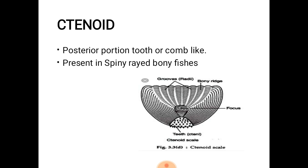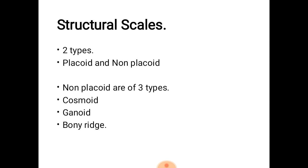As you can see the grooves in the diagram. On the basis of structure, two types of scales are present: placoid and non-placoid. Non-placoid scales are of three types: cosmoid, ganoid, and bony ridge.